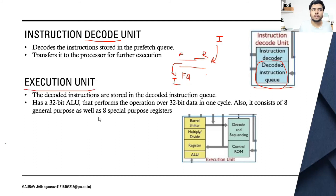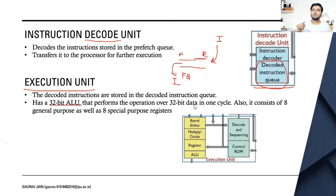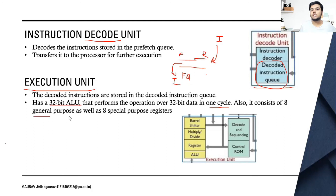The execution unit executes the decoded instructions that were stored in the decode queue, using the ALU — the arithmetic logic unit — along with other units such as barrel shifter, multiply, divide, and associated registers. It has a 32-bit ALU because it's a 32-bit microprocessor, and it performs operations on 32-bit data in one cycle. For the execution process, it consists of eight general-purpose registers and eight special-purpose registers.